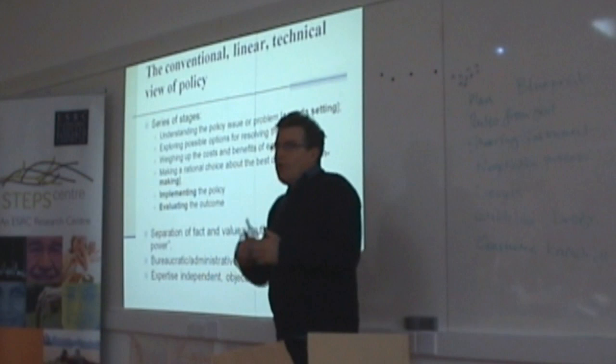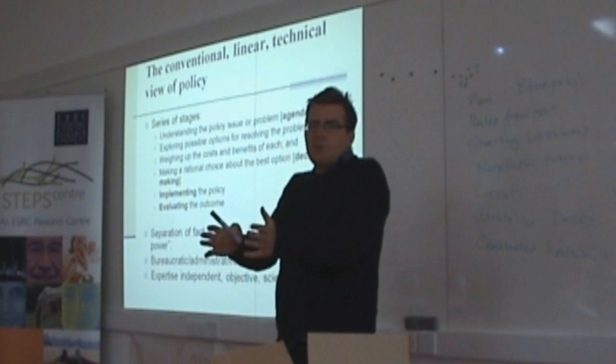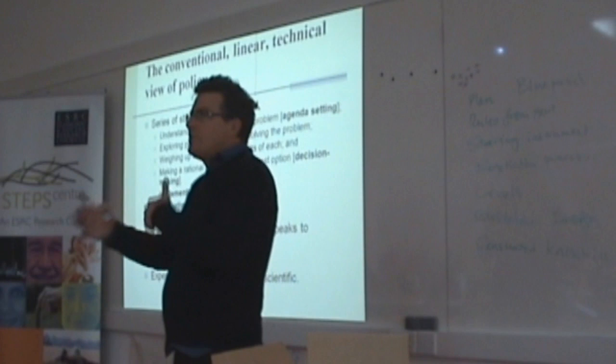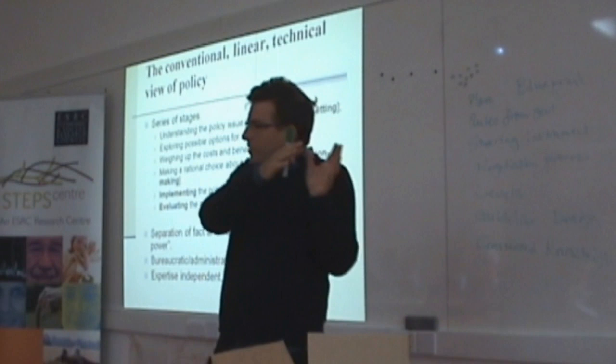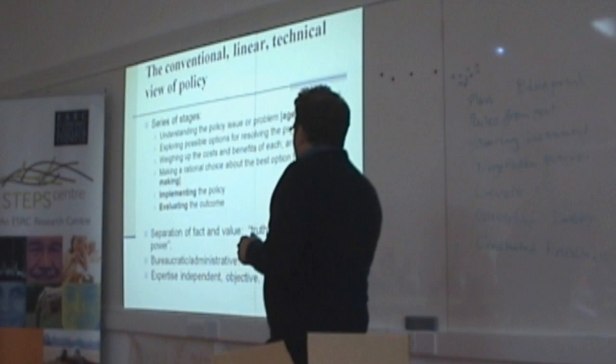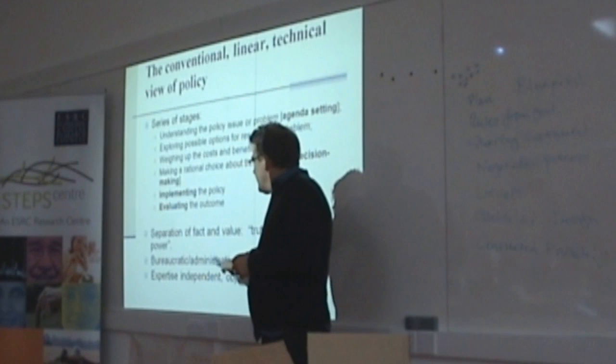It also assumes that bureaucratic administrative processes are simply executive — that they just take a policy and implement it as it is. But most policies are not specified at that level of detail, and there are all sorts of things that go on in the process of implementation. When thinking about policy processes, we're not just interested in creating the piece of paper labeled policy, but in the whole chain of activity right through to action on the ground.